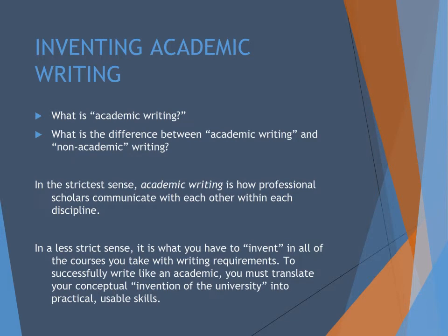We should start off by talking about what academic writing really means. You've probably heard those words before in previous classes, but for this course in particular, academic writing is how professional scholars communicate with each other. It's how knowledge is created, spread, and debated among professionals in different fields. Every field represented in the university has its own kind of academic writing. How a history professor writes about history and how a social work professor writes about history might be very different, but some fundamental rules apply in both cases. We'll be breaking down those rules this semester.